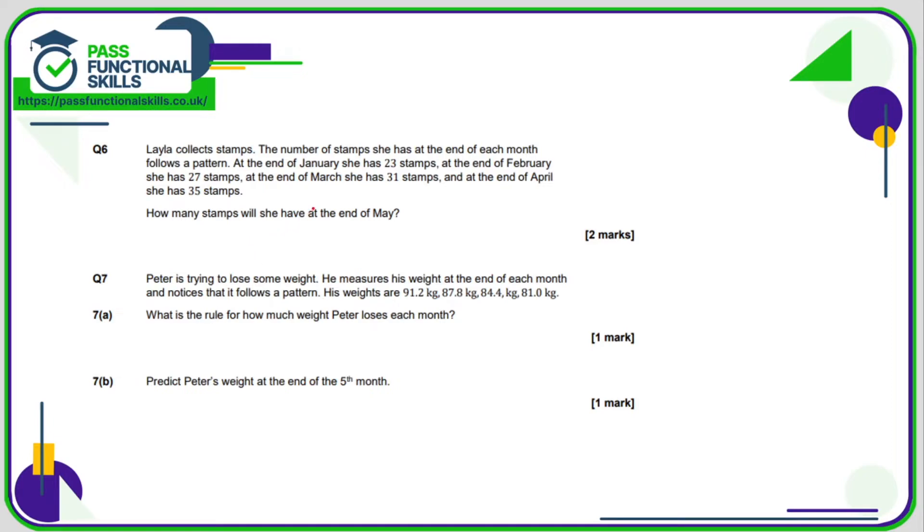So Layla collects stamps. At the end of January she's got 23, then 27, then 31, then 35, so after all these words we can see it's actually quite a simple number pattern, we're going up in 4 each time. So if this is April, then in May she's going to have another four stamps, so 35 plus 4 is 39.